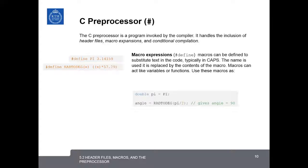Another useful function of the C preprocessor is to interpret macro expressions. Macro expressions can be defined to substitute text in the code, typically in capital letters. Macro expressions tell the preprocessor to do a search and replace in your code. The name is usually written in caps, and then it's replaced with the contents of the macro. Macros can act like variables or like functions. For example, here we can define pi as the value of 3.14159 at the top of the source code, and we can also define rad to degree of x as x times 57.29. And now inside the code, we can declare a variable pi which is equal to 3.14159 easily by writing the capital words pi from the macro. When the preprocessor processes this file, it will cut and paste this 3.14159 and place it into the code here. And it will get rid of this line then during the preprocessing. And similarly, the angle here, we can write rad to degree of pi over 2, which will substitute this expression here for rad to degree. And this will give us the angle of 90.